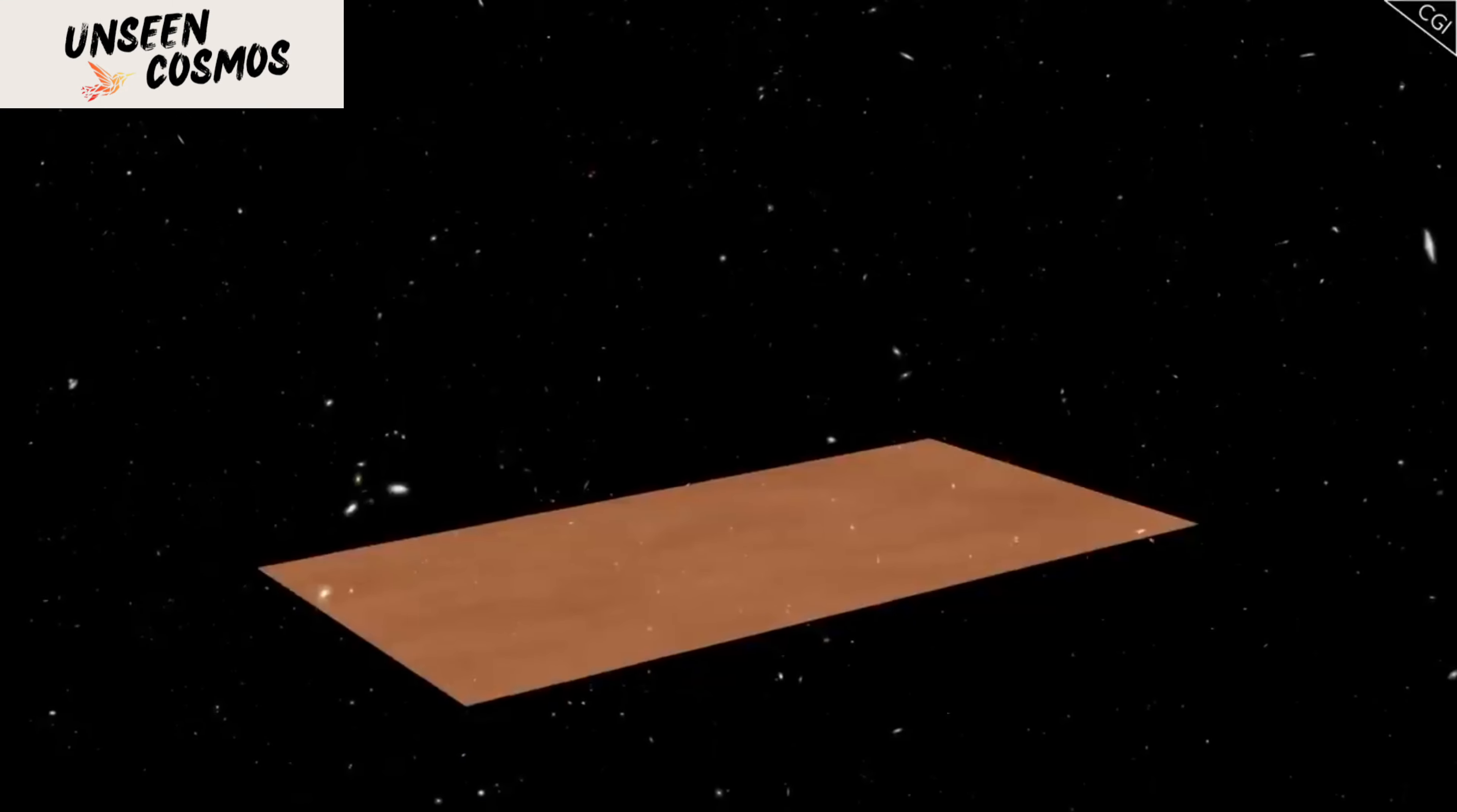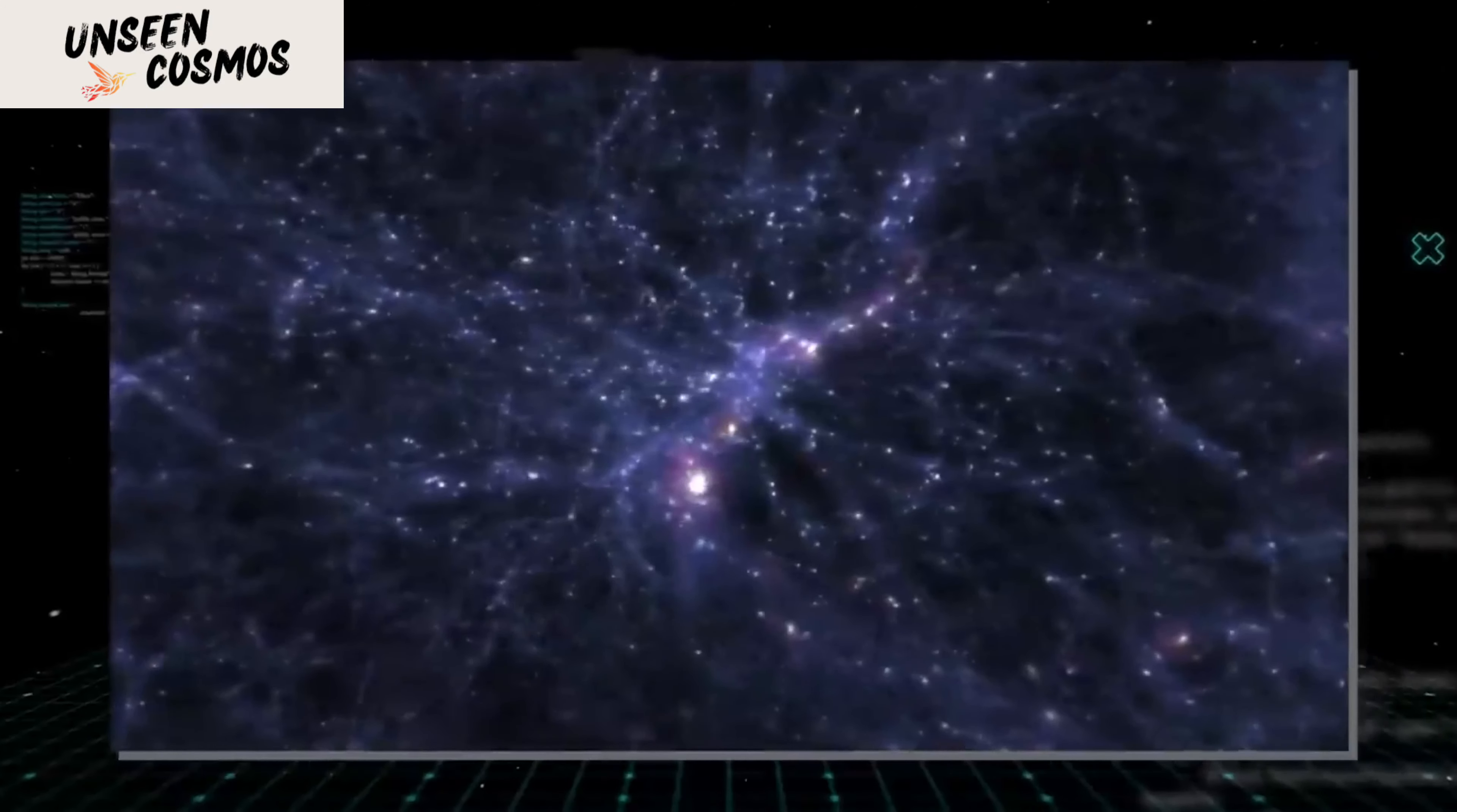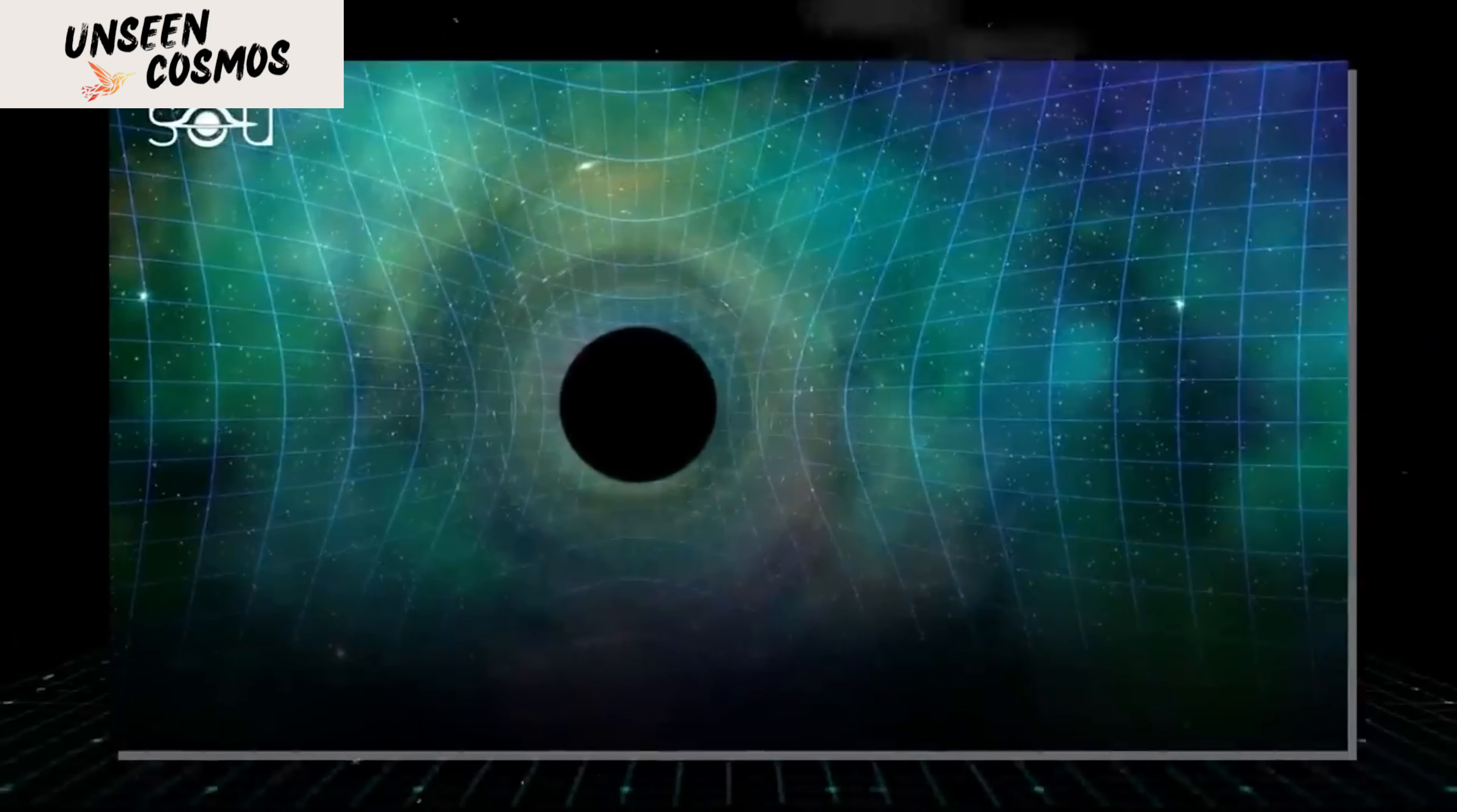Albert Einstein further expanded on this concept with his general theory of relativity, which incorporated gravity. According to this theory, gravity is not a force acting between masses, but rather the curvature of space-time caused by the presence of mass or energy. This means that massive objects, like stars or planets, can bend space-time, creating gravitational fields. Extreme phenomena such as black holes, gravitational waves, and wormholes are all consequences of this space-time curvature, and it is precisely this concept of bending and warping space-time that has captured the imagination of scientists and science fiction enthusiasts alike.